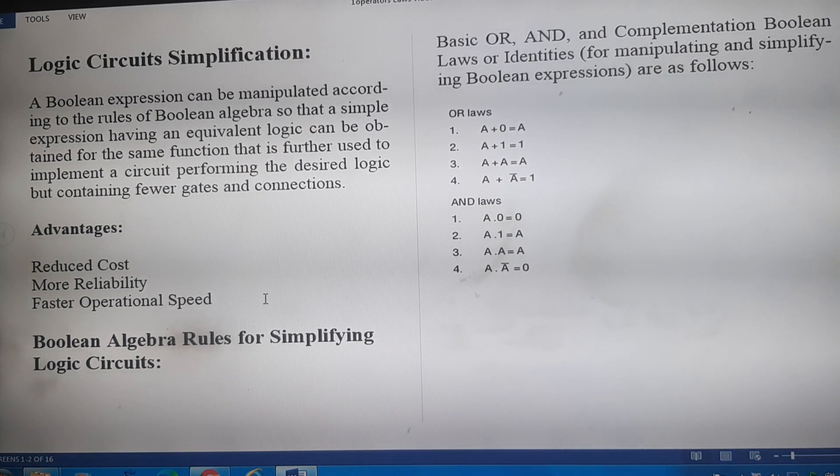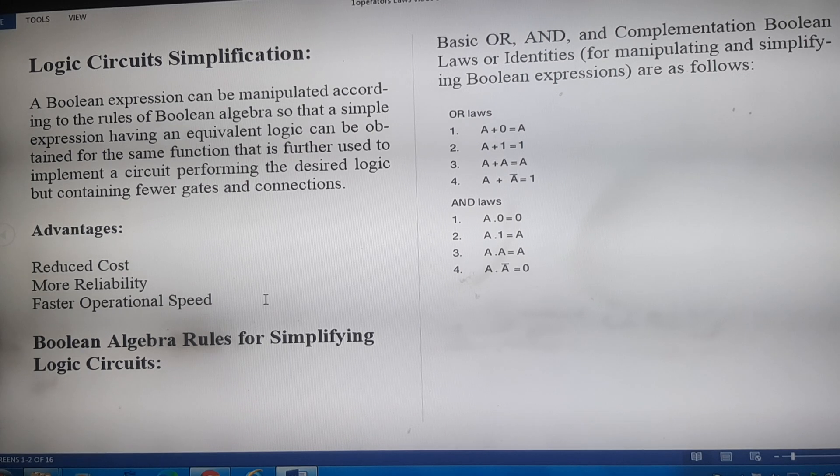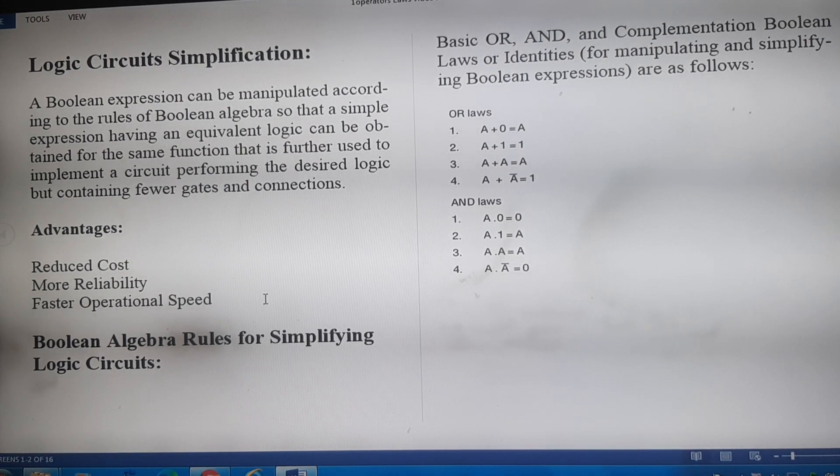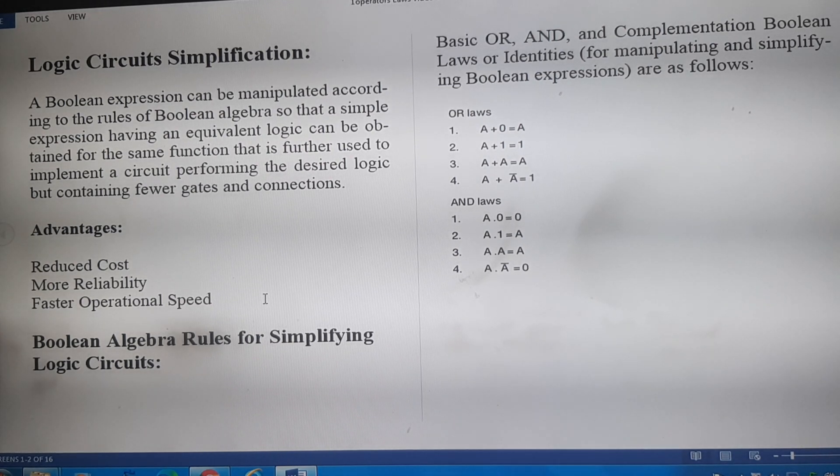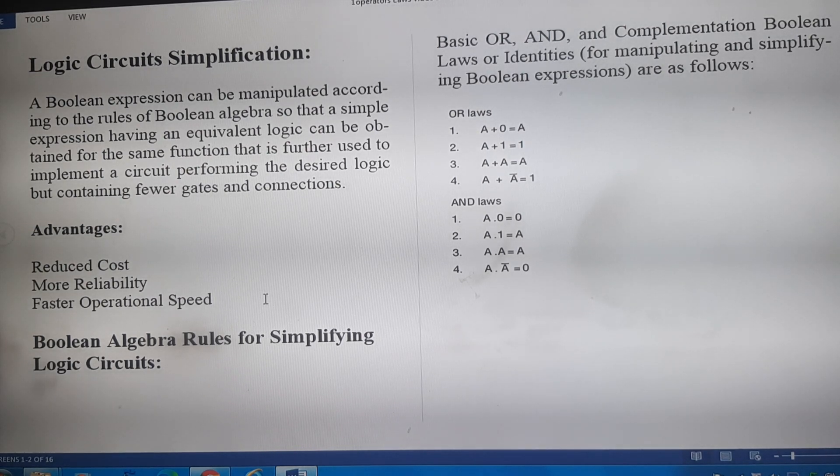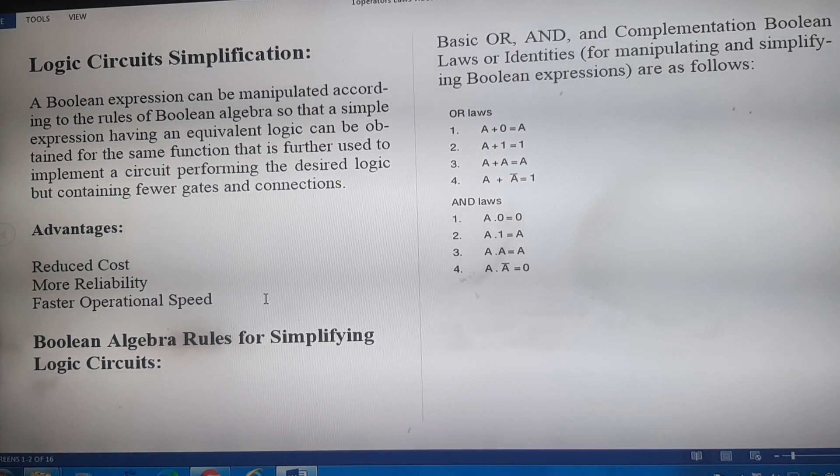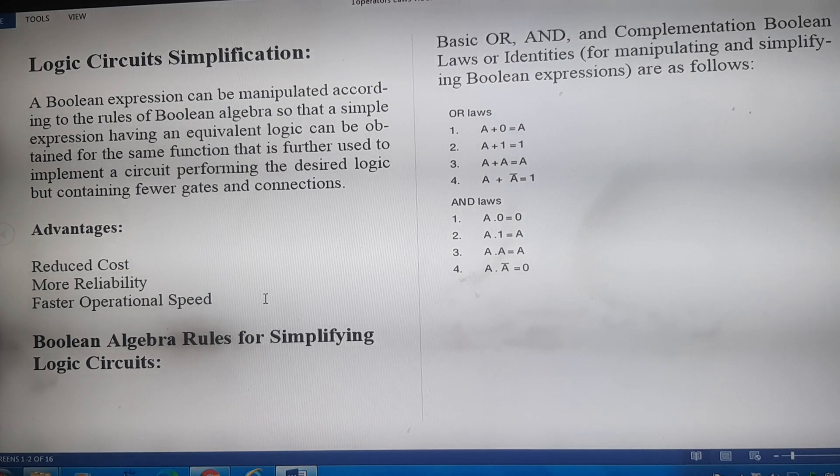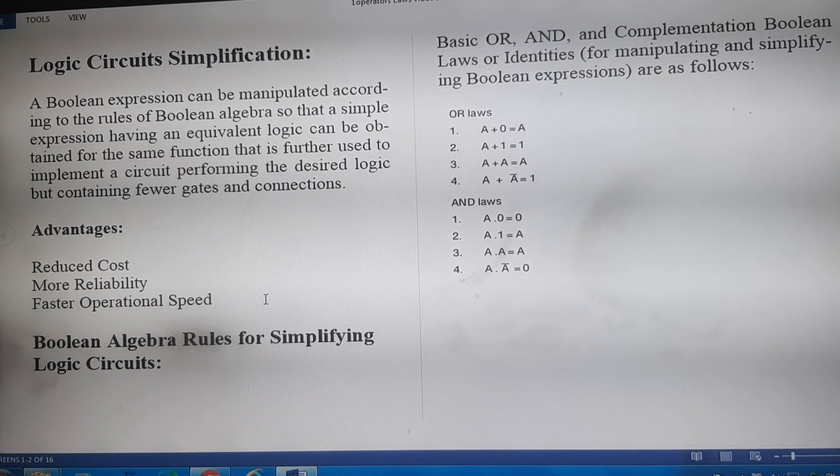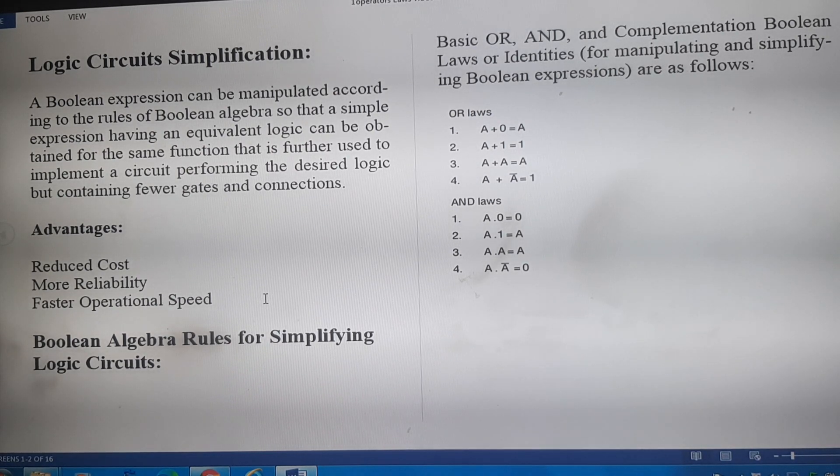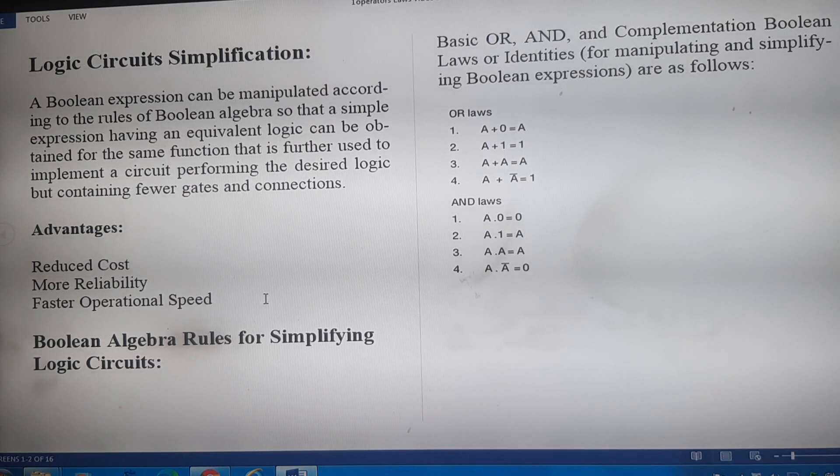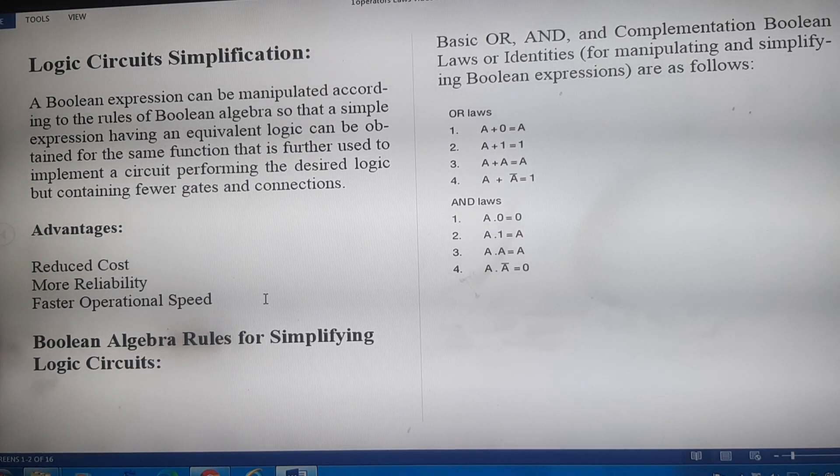OR laws: Take a variable, name it as A, which can take on only two values 0 and 1. The first rule states that A + 0 = A. The second rule states that A + 1 = 1. The third rule states that if a variable is ORed with itself, the output is A. And the fourth rule states that if a variable is ORed with its complement, then the output is 1.